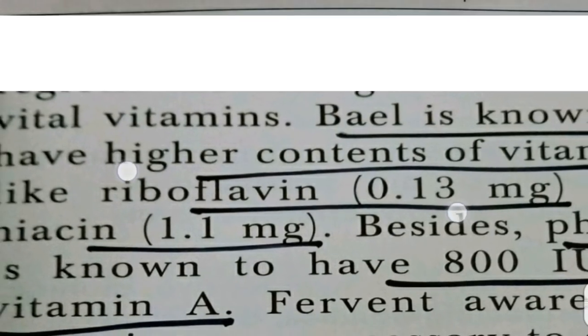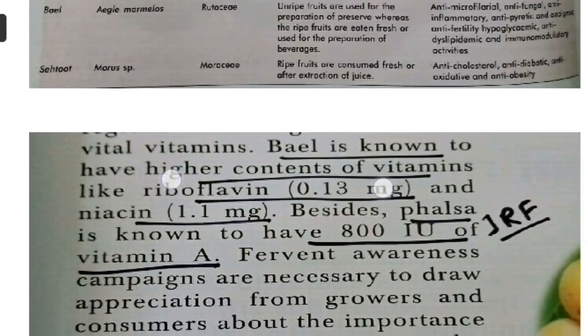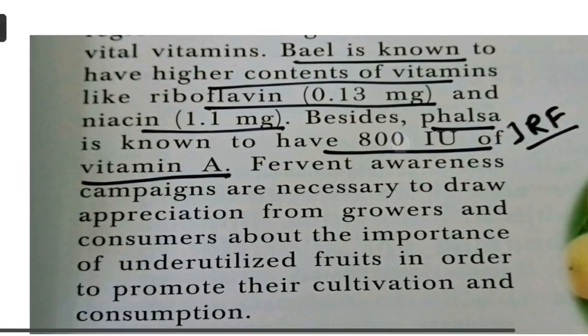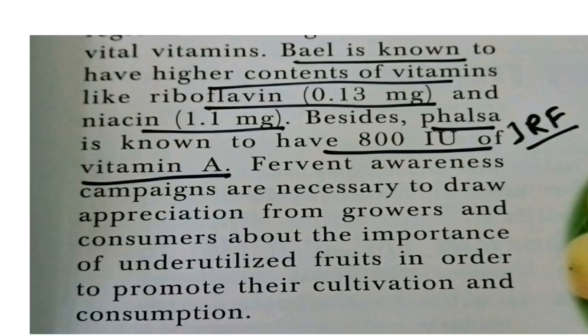Bael is considered a good and rich source of vitamins, including Riboflavin at about 0.13 mg and Niacin at about 1.1 mg. In the case of Falsa, it is a good source of Vitamin A at about 800 international units.